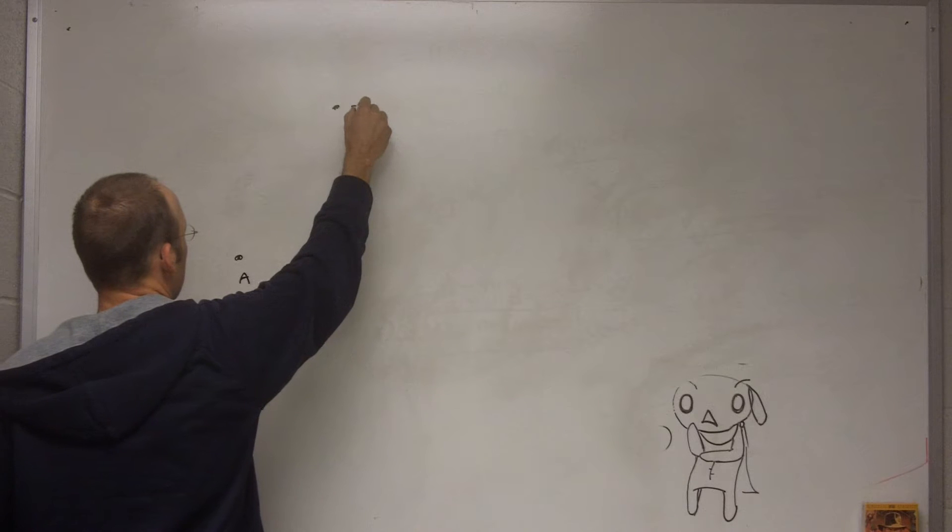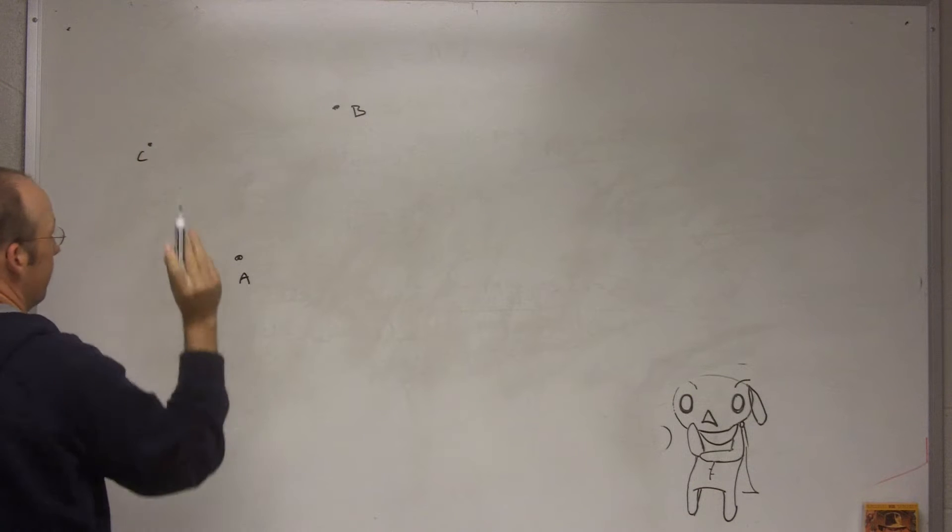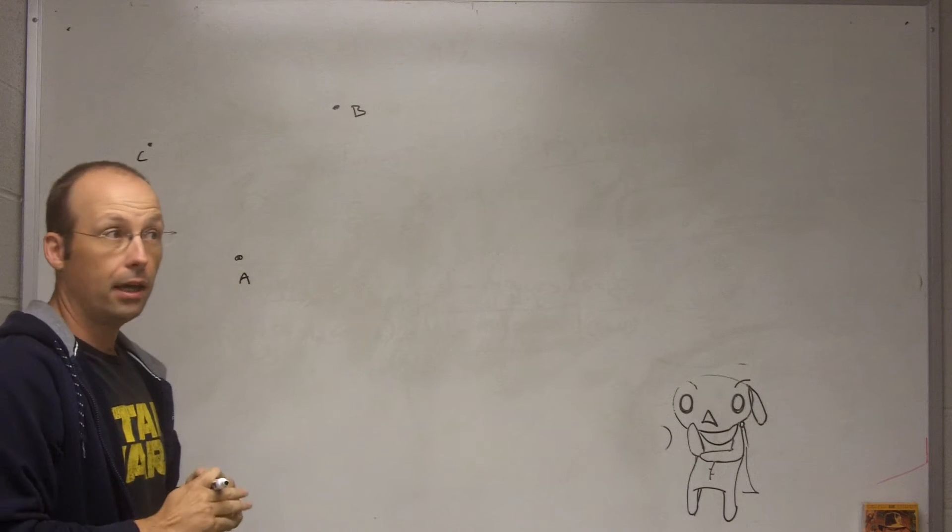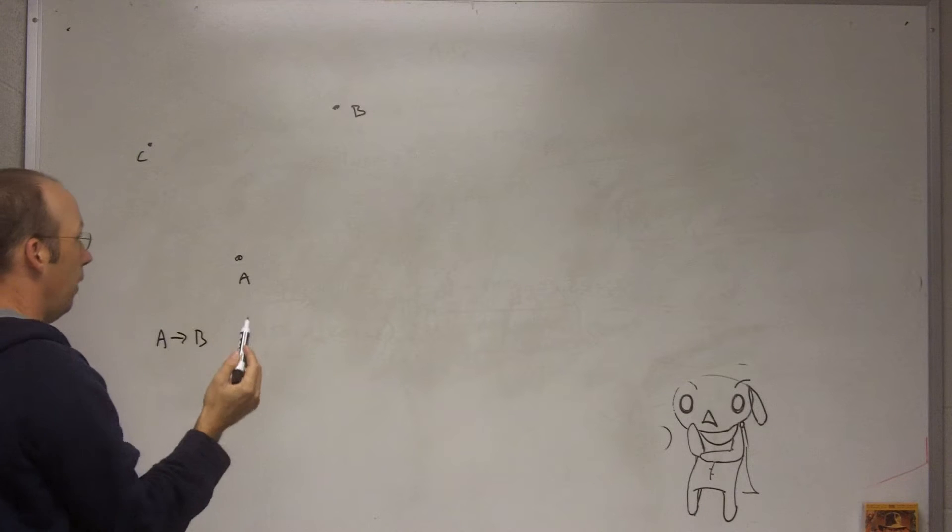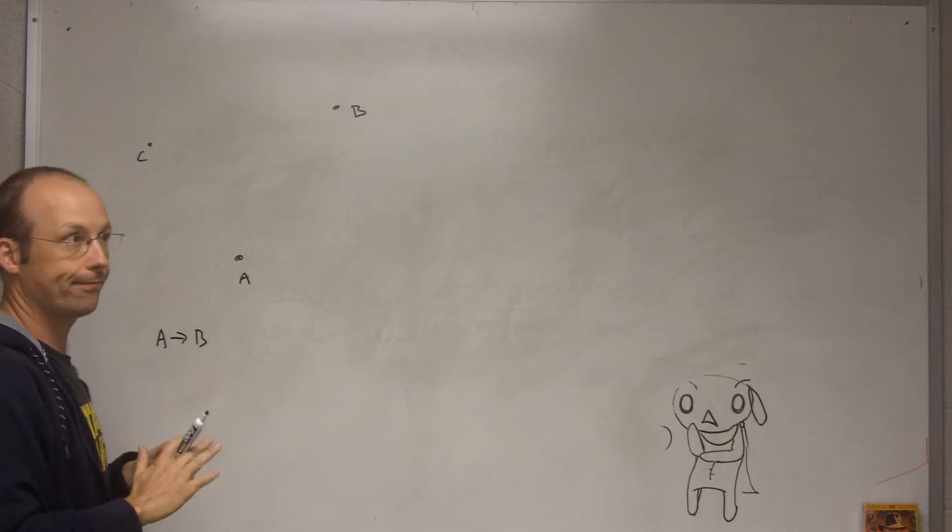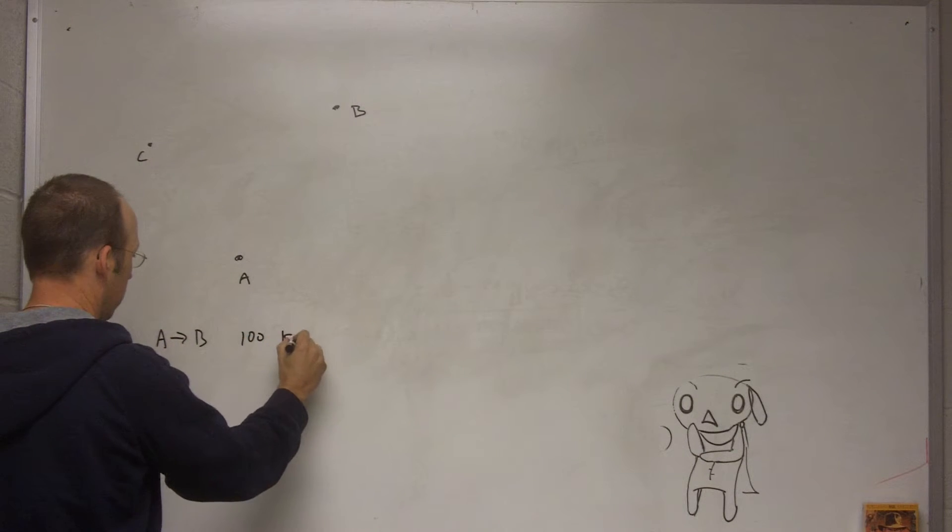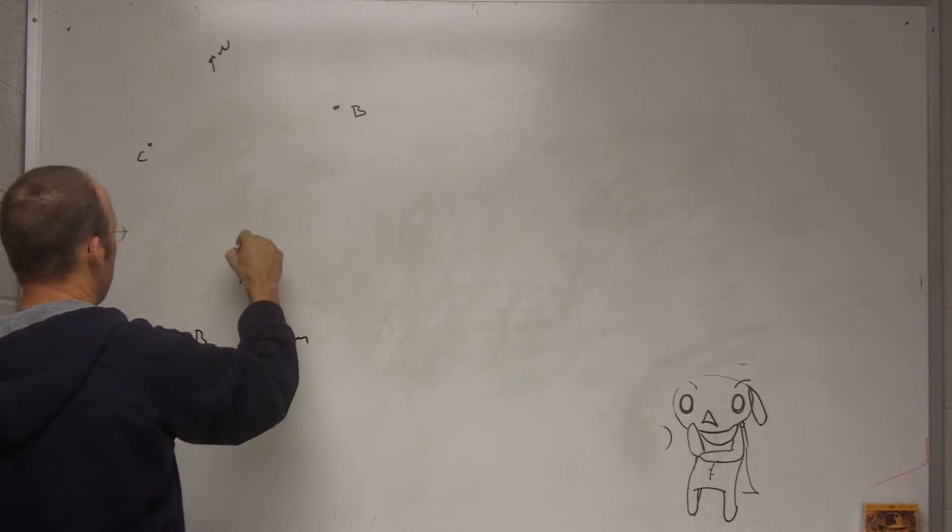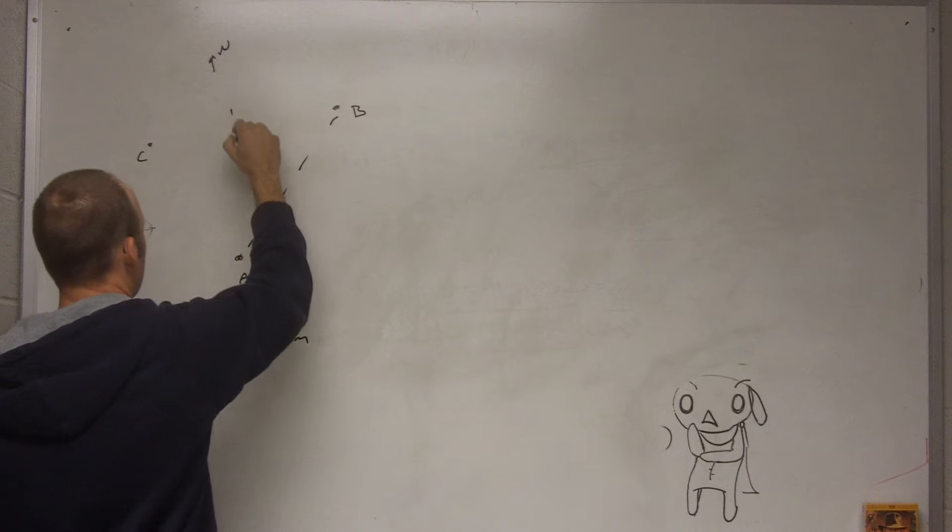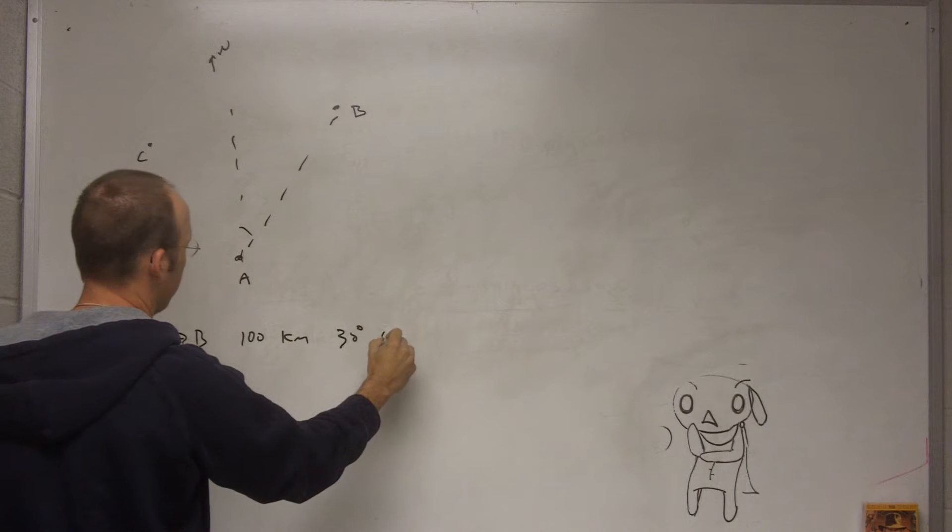And then you're going to end up at City C. So let's say going from A to B, I'm just going to write this in a different way. A to B is going to be, give me a number, 100 kilometers, and this is north. Let's say this is 30 degrees east of north.